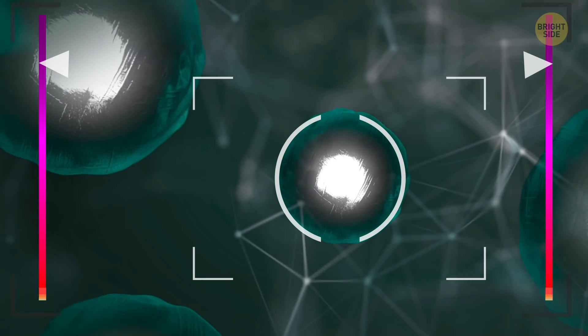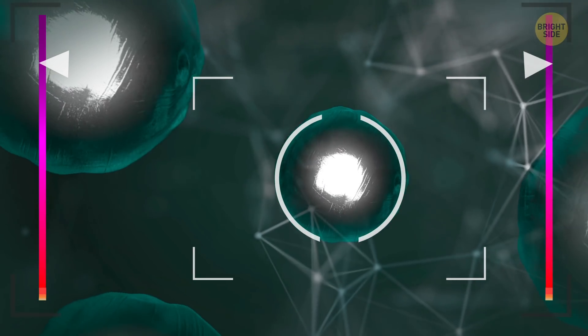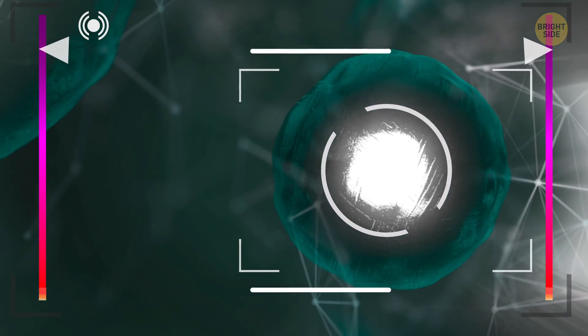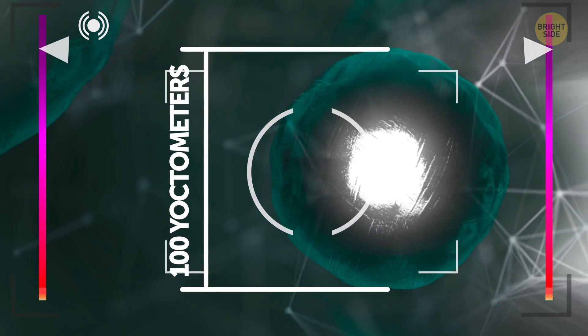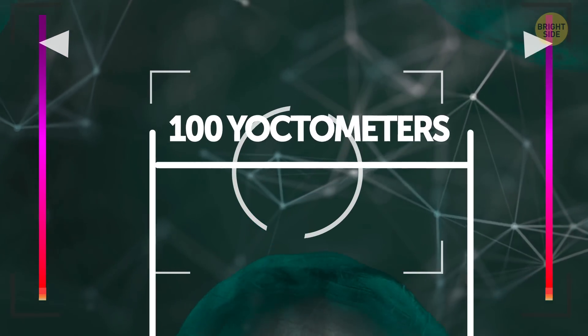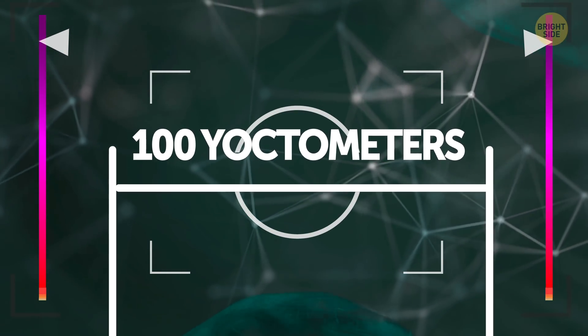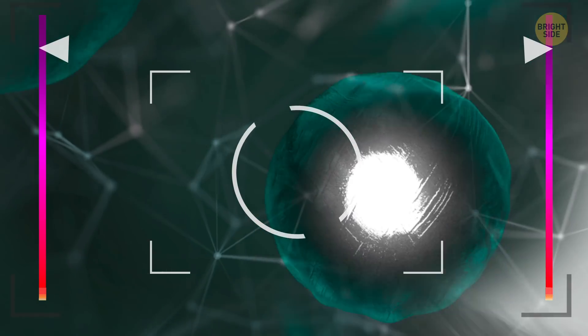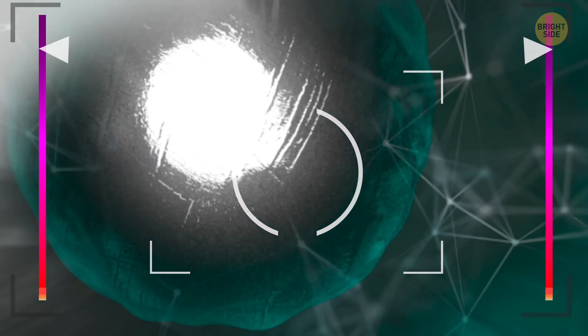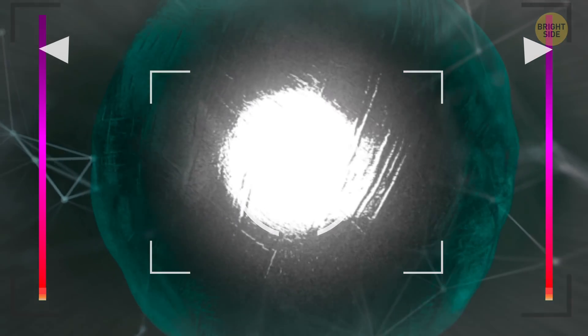And finally, the sixth type is top quarks. Their size is 100 yoctometers, yet another part per thousand added. And against all logic, they're the most massive of all quarks. Just think, they're 100,000 times heavier than up quarks. No wonder they're called top.